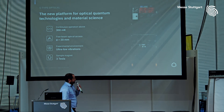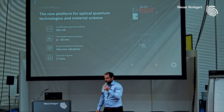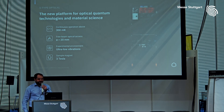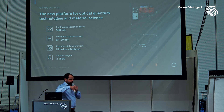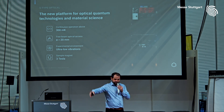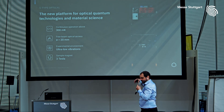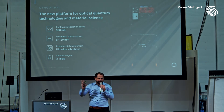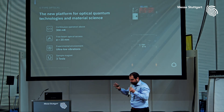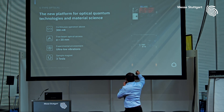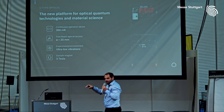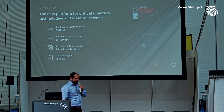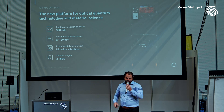This year we also delivered two units of our new system, the S-Type Optical. It's based on the same cooling technology, providing continuous sub-Kelvin operation with ADR technology. But instead of having the fast sample loader on top, we packed it very tightly in a 19-inch rack and allowed optical access at the top, making it a platform for optical quantum technologies and material science.